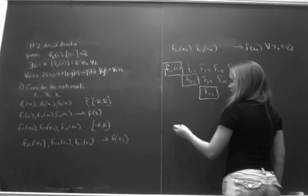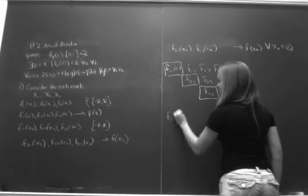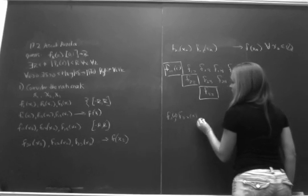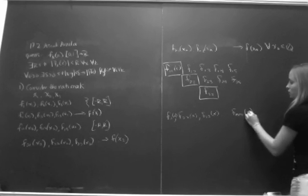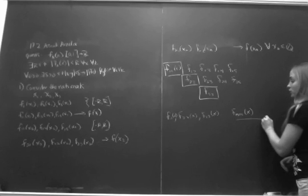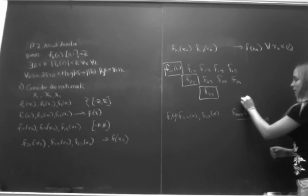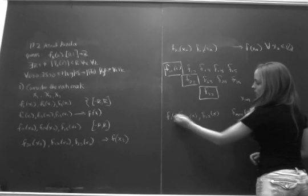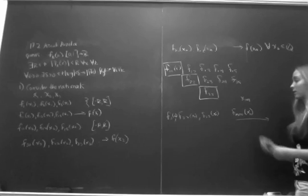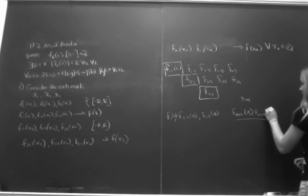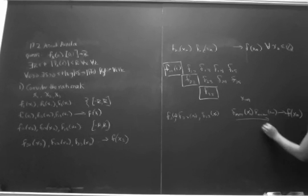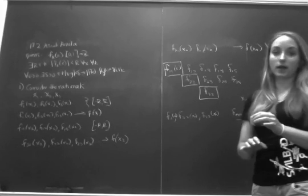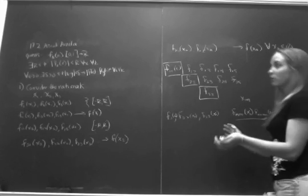So we form the diagonal sequence f_{1,1}, f_{2,2}, f_{3,3}, ..., and once we reach the f_{m,m}(x) term, from here on out this sequence will converge for any xₙ — specifically, it will converge to f(xₙ) for all m greater than some arbitrary n. Basically, this process of diagonal extraction will work for any rational number. So we've proven convergence for the rationals.